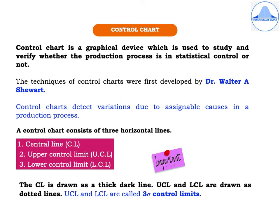What are control charts? A control chart is a graphical device which is used to study and verify whether the production process is in statistical control or not. The techniques of control charts were first developed by Dr. Walter A. Shewart, and control charts detect variations due to assignable causes in a production process.